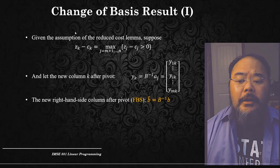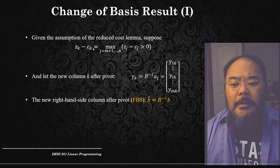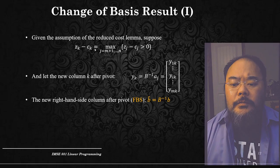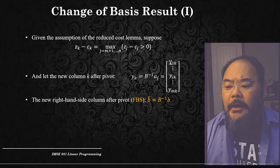First, we start with the assumption of the reduced cost lemma. Suppose z_k minus c_k is the maximum of z_j minus c_j, which is greater than zero for all the non-basic columns. This is how we choose the entering variable. The new column k after pivot equals y_k, which equals B inverse times a_k.